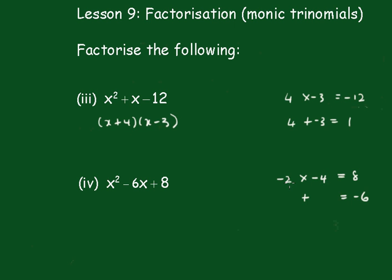Because negative 2 times negative 4 gives me the positive 8, but negative 2 plus negative 4 gives negative 6. So that becomes (x - 2)(x - 4).